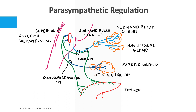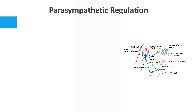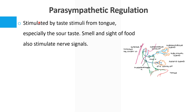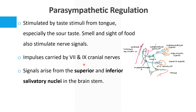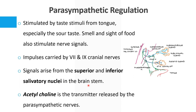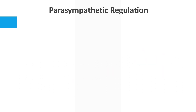This is how salivation occurs when we taste something. Parasympathetic regulation is stimulated by taste stimuli from the tongue, especially sour taste, and also by the smell and sight of food. The impulses are carried via the facial and glossopharyngeal nerves — cranial nerves 7 and 9 — and the signals arise from the superior and inferior salivatory nucleus in the brainstem. The main neurotransmitter is acetylcholine, as in other parts of the parasympathetic nervous system, and acetylcholine in turn increases salivation.